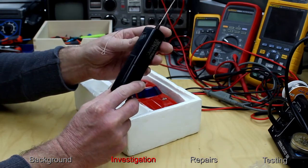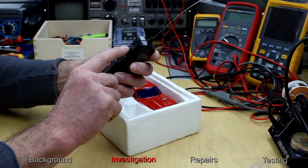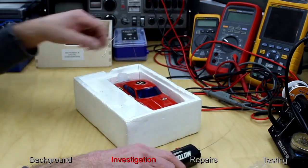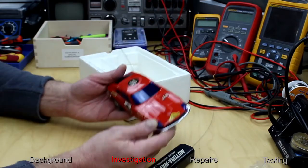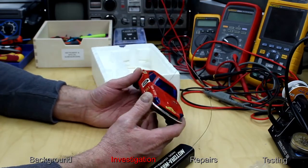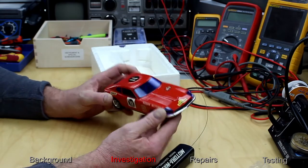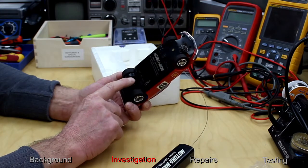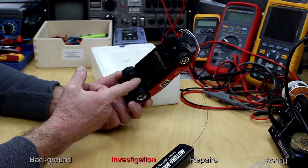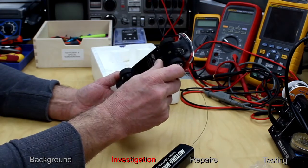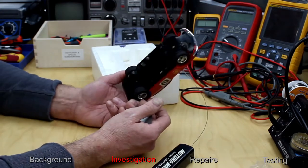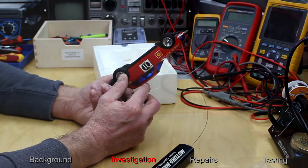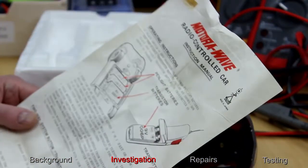Alright, so some kind of radio control transmitter, single push button. The car looks like in pretty good condition. It's made in Japan, it's got a fast position and a slow position. Battery compartment that is rather corroded. A set of instructions.